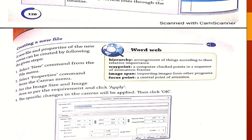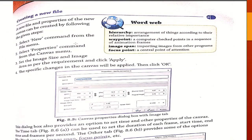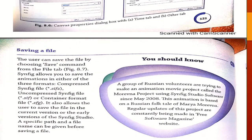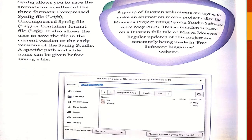To create a new file, select the new command, click on properties, select the image size you want, and then click apply. The specific changes to the canvas are applied, then click OK. The file will open and you can perform all your edits. To save the file, click the save command, which allows you to save the animation in one of three formats: compressed sin file, uncompressed sin file, or container format file. It also allows the user to save the file in the current version or an earlier version of Synfix Studio. Choose any file format and save your file.